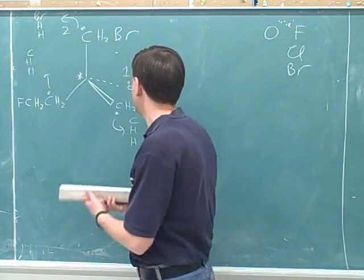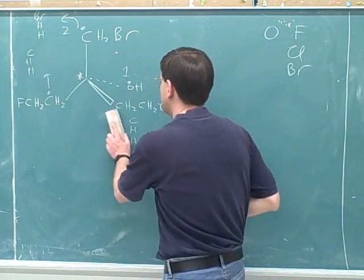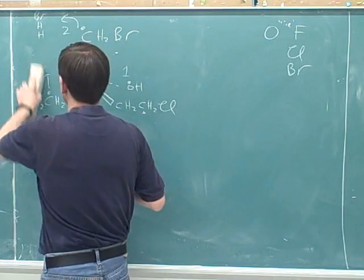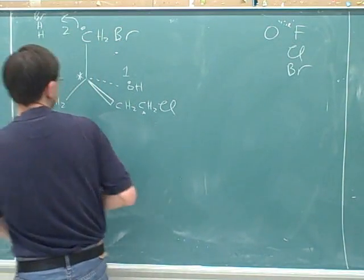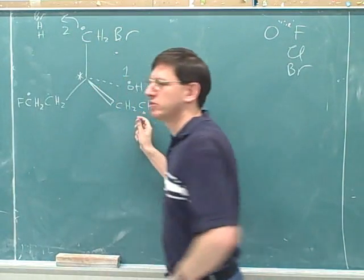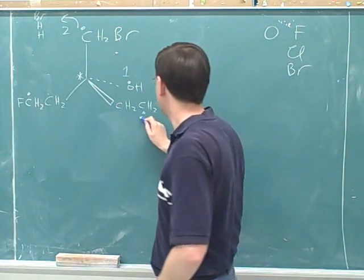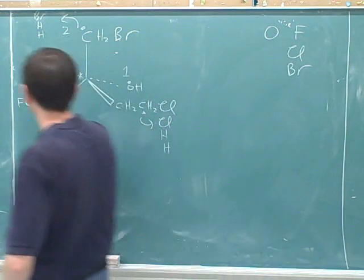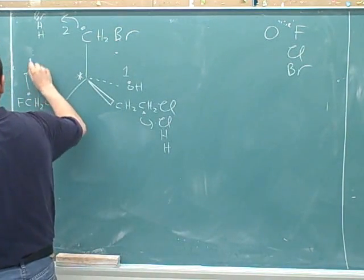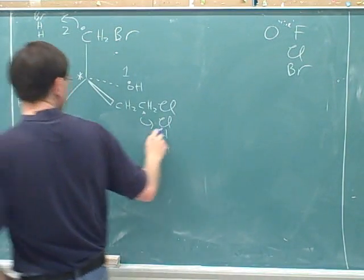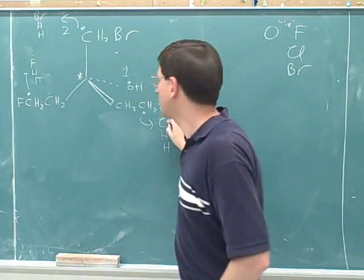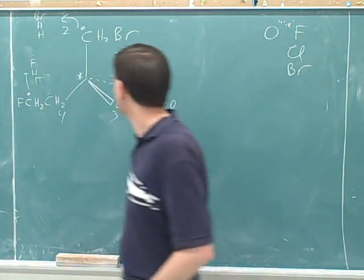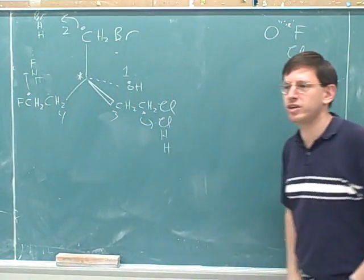And now what we do is, for the two things that are still tied, we move the dot one step further out. Since these were tied, we have to move the dot one step further out. Cl, H, H. F, H, H. And we'll get C on the center. So this would be number three, and this would be number four.